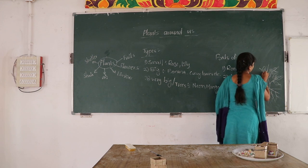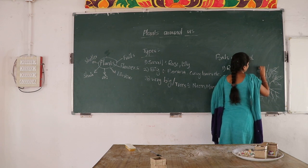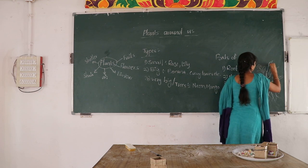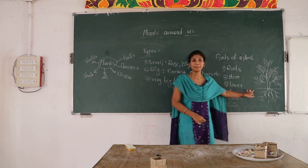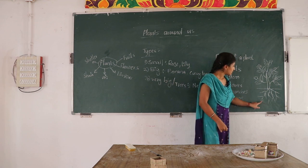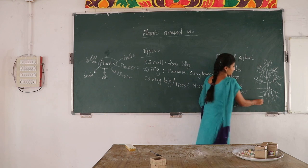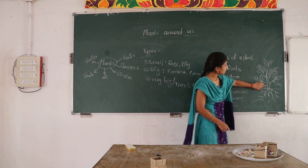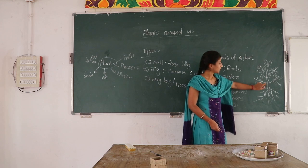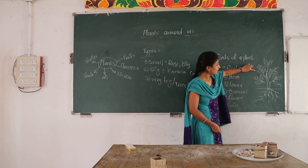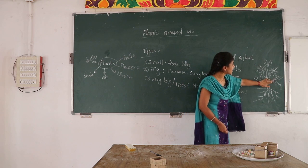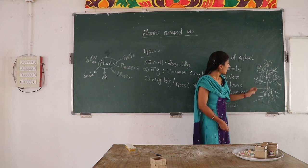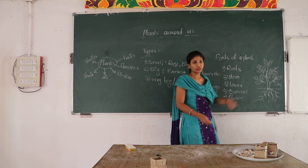Assume that this is a plant. These are roots, and this is stem, and these are leaves. This is a flower, these are branches, and this is a fruit.